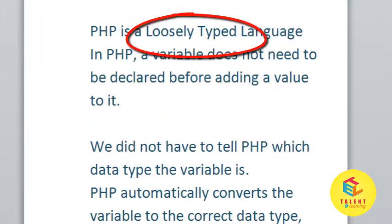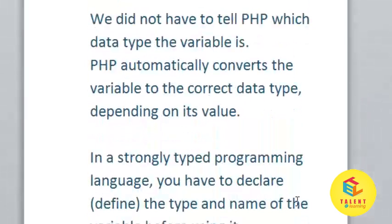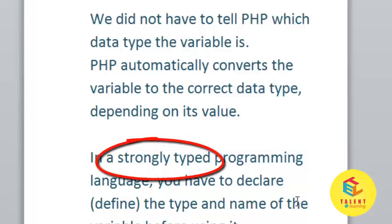PHP is a loosely typed language. A variable does not need to be declared before adding a value to it. We do not have to tell PHP which data type the variable is — PHP automatically converts the variable to the correct data type depending on its value. In a strongly typed programming language, you have to declare the data type and name of the variable before using it.